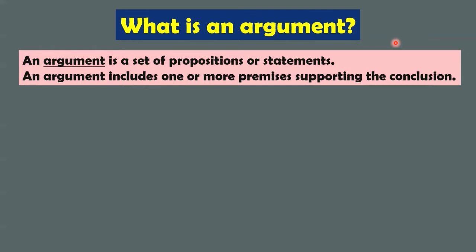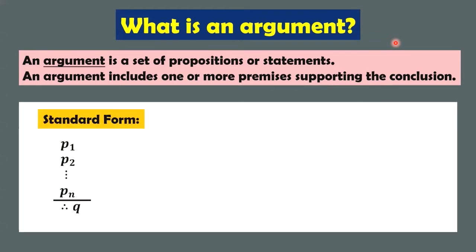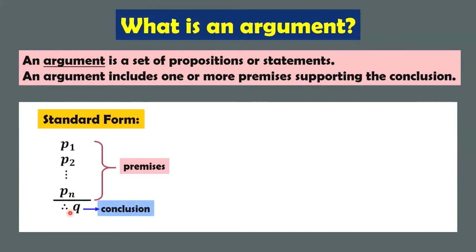What do I mean by that? Let me show you the two forms of an argument. Here we have the standard form. These are the premises — all declarative sentences that are either true or false, but not both. So these are all propositions. We have N propositions. And this Q, that is called the conclusion.